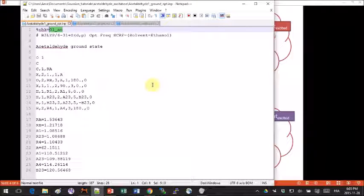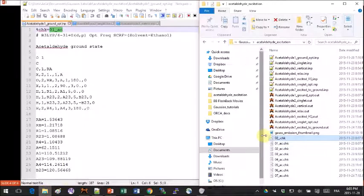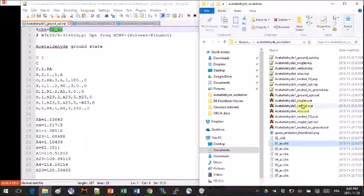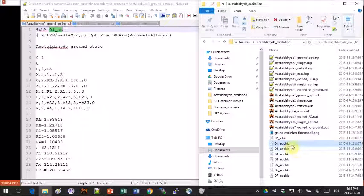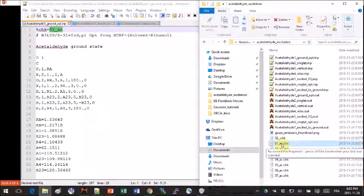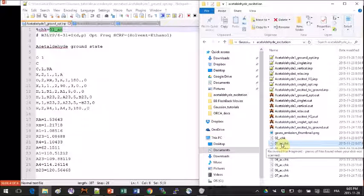When you run this calculation, you will get the output file from step one and you will also get this checkpoint file from step one. If you open it in notepad it will look crazy because it's not a text file, but what this file contains is a lot of important information from your calculation that you just ran, and you can use it to speed up your other calculations that will be based on this one.